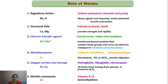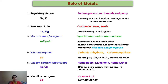Looking at the roles of metals in detail, this slide mentions nerve signals and impulses by sodium and potassium ions. The balance of sodium and potassium ions in a cell is very important for muscle contraction and proper signaling of nerve cells. Calcium and Magnesium provide strength and rigidity to bones and teeth. Iron present in hemoglobin, myoglobin, and cytochromes are very important metallobiomolecules. Zinc present in carbonic anhydrase and carboxypeptidase are very important enzymes.